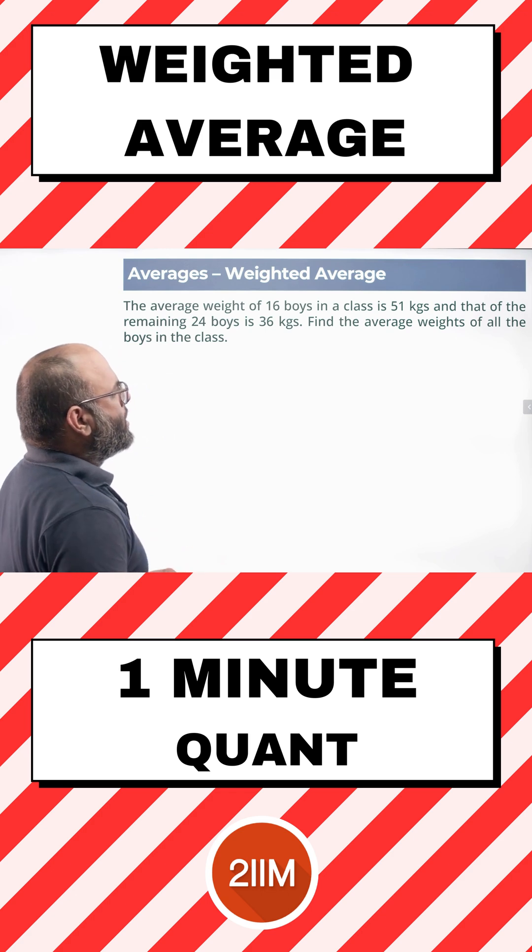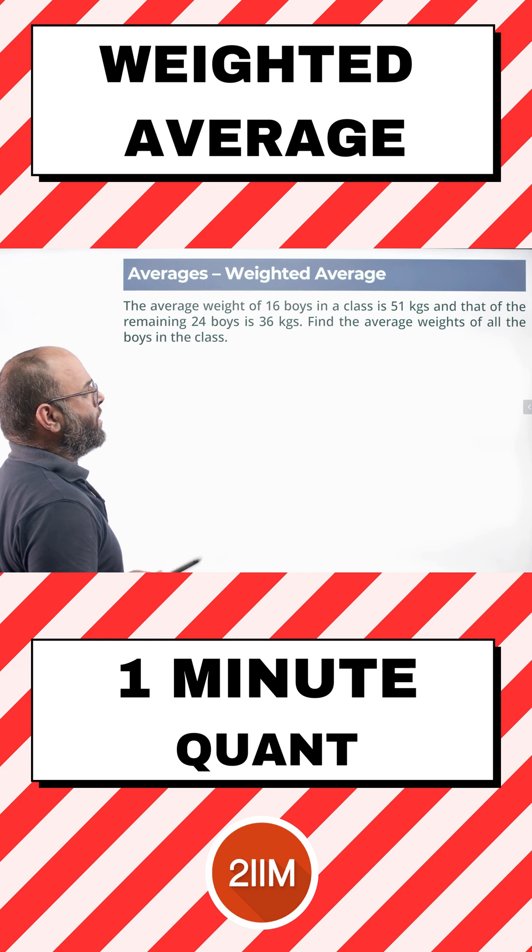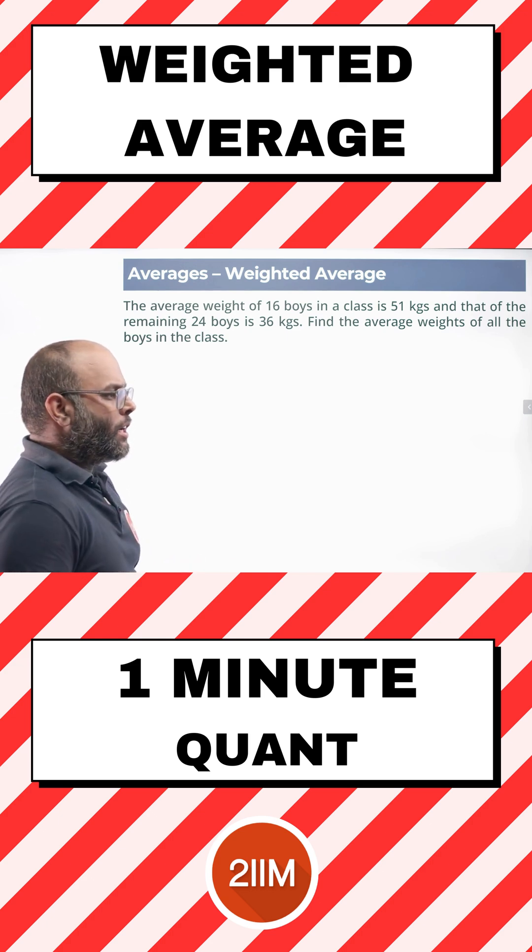The average weight of 16 boys in a class is 51 kgs and that of the remaining 24 boys is 36 kgs. Find the average weights of all the boys in the class.